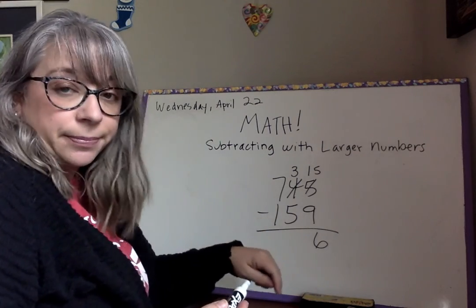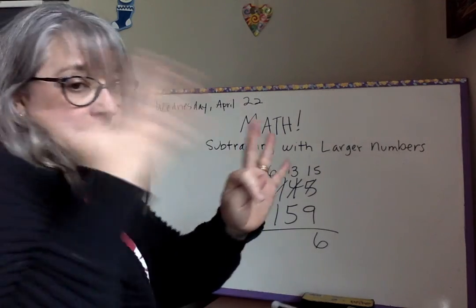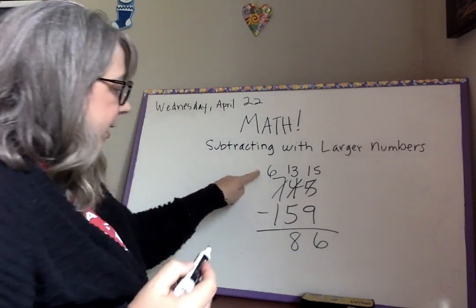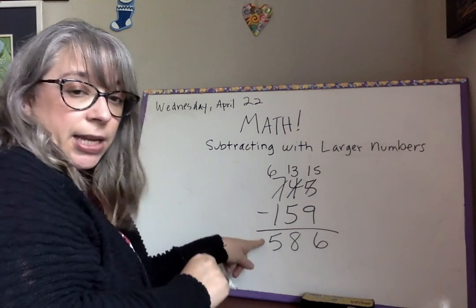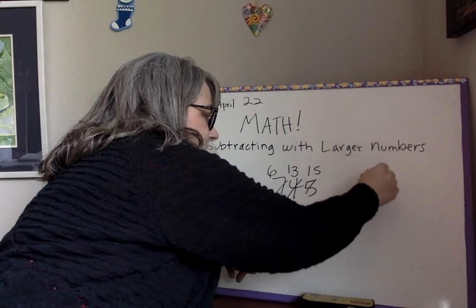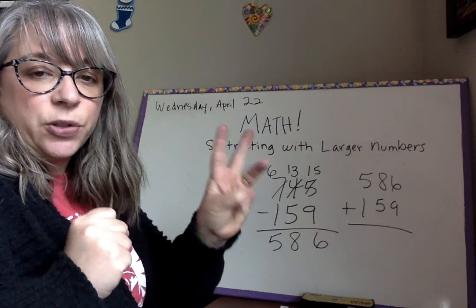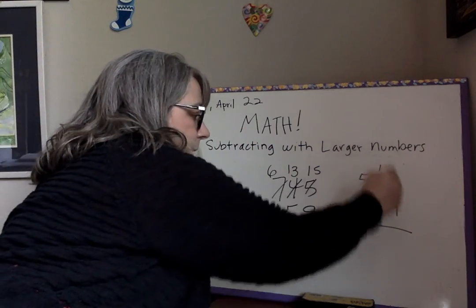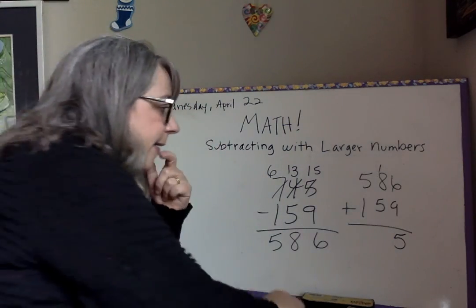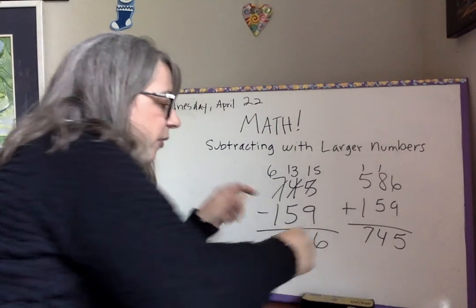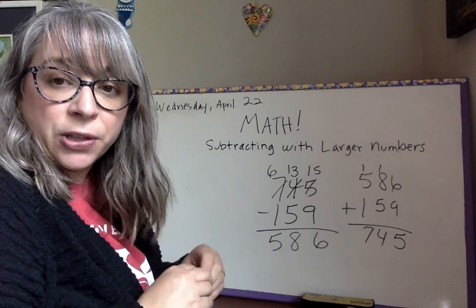Now three minus five — do not flip those numbers! We borrow again. The six becomes a five and that becomes a thirteen. Thirteen minus five is eight. Five minus one is four... wait, six minus one is five. Five hundred and eighty-six. Seven hundred and forty-five minus one hundred and fifty-nine is five hundred and eighty-six. Let's check: five eighty-six plus one fifty-nine equals seven hundred and forty-five. Correct!